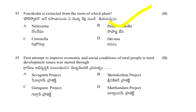The first attempt to improve the economic and social conditions of rural people through rural development was started through: Sevagram project, Sriniketan project, Gurgaon project, or Martandam project. The answer is mainly the Sriniketan project.